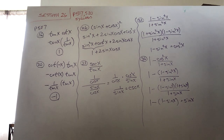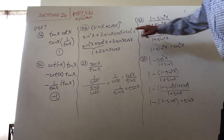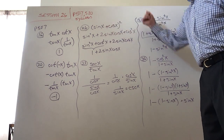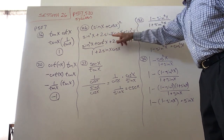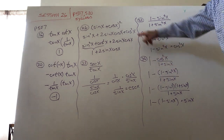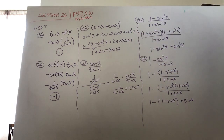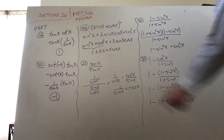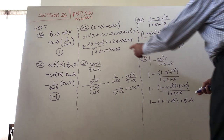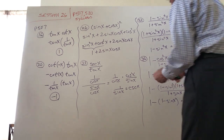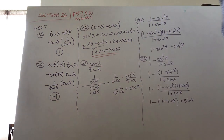Number 26 is to expand (sin x + cos x)². Expand does not become sin²x + cos²x — you want to FOIL this. Square the first, twice the product, square the last: sin²x, then 2 sin x cos x, then cos²x. Linking sin²x + cos²x gives 1 by the Pythagorean identity, and the remainder is 2 sin x cos x, so the answer is 1 + 2 sin x cos x.